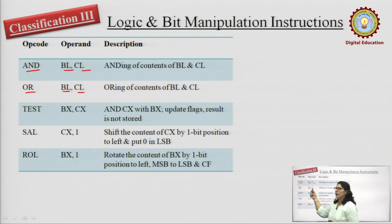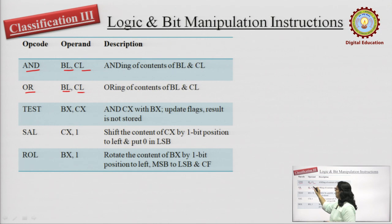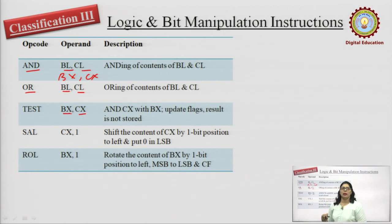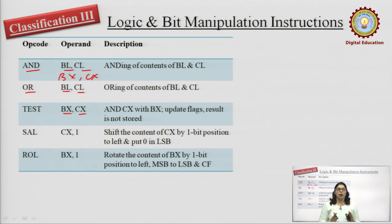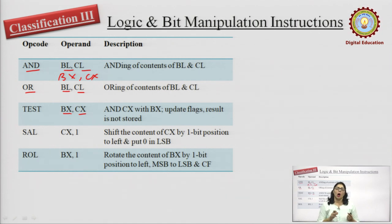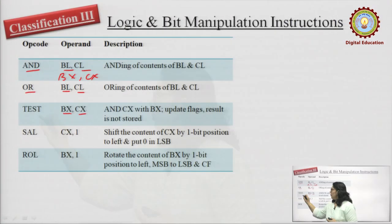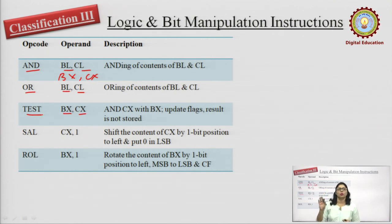Next is TEST BX, CX. What TEST does is perform an AND operation between the 16-bit numbers in CX and BX, but the result is NOT stored. In this case, only the flag registers are updated, and from the flag registers we learn which content is higher or lower. So here we are only checking — we are not actually storing the AND result. This is the key difference between AND and TEST.